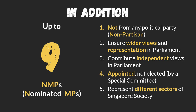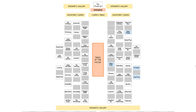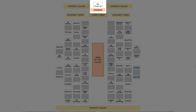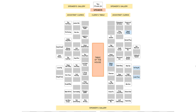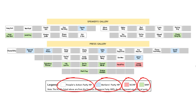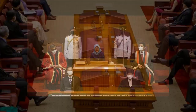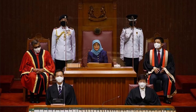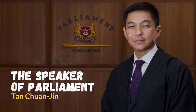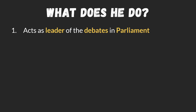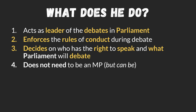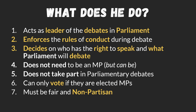This is the seating position in parliament. The current speaker is Mr. Tan Chuan-Jin, who decides who speaks. The leaders sit in the middle — Mr. Pritam Singh faces Mr. Lee Hsien Loong, the current leader of the incumbent party. Those in white are from the People's Action Party, Workers' Party is in blue, NCMPs are in red, and NMPs are in green. The speaker acts as the leader of debates, enforces rules of conduct during debate, decides who has the right to speak, and must be fair and non-partisan.